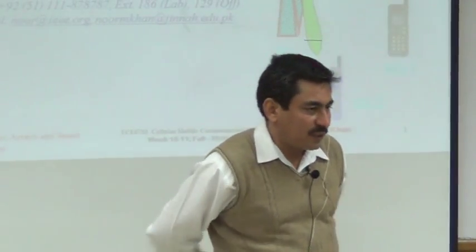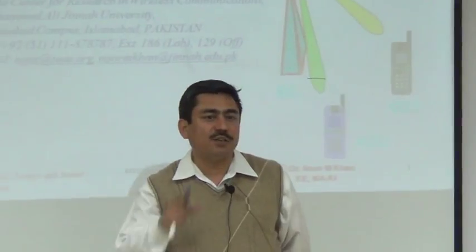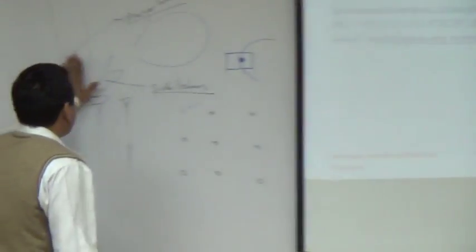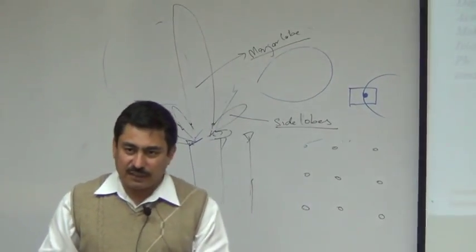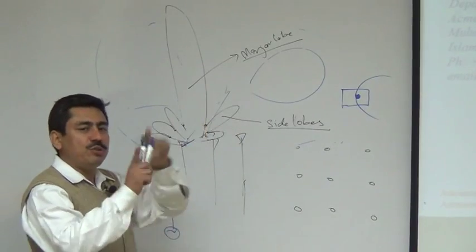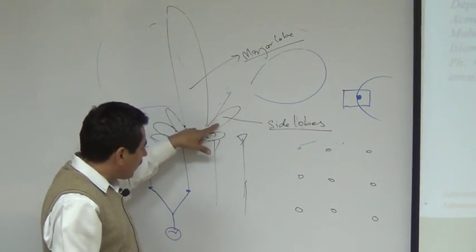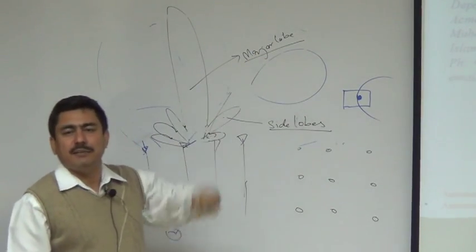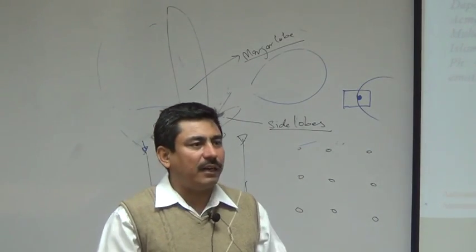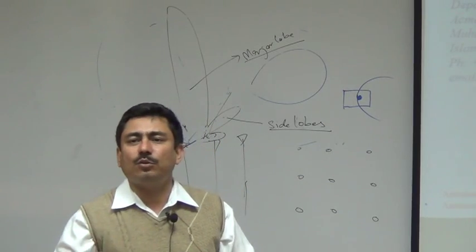The major lobe's power should be increased — that is our main objective. And minor lobes or side lobes should be suppressed — that is our second objective. The ratio of the signal strength of the major lobe to the signal strength of the minor lobe should be increased, similar to signal-to-noise ratio. Think of it as signal-to-interference ratio. In SDMA, the user of interest is placed on the major lobe, while other users ideally fall on null points. Suppressing minor lobes reduces interference overall.